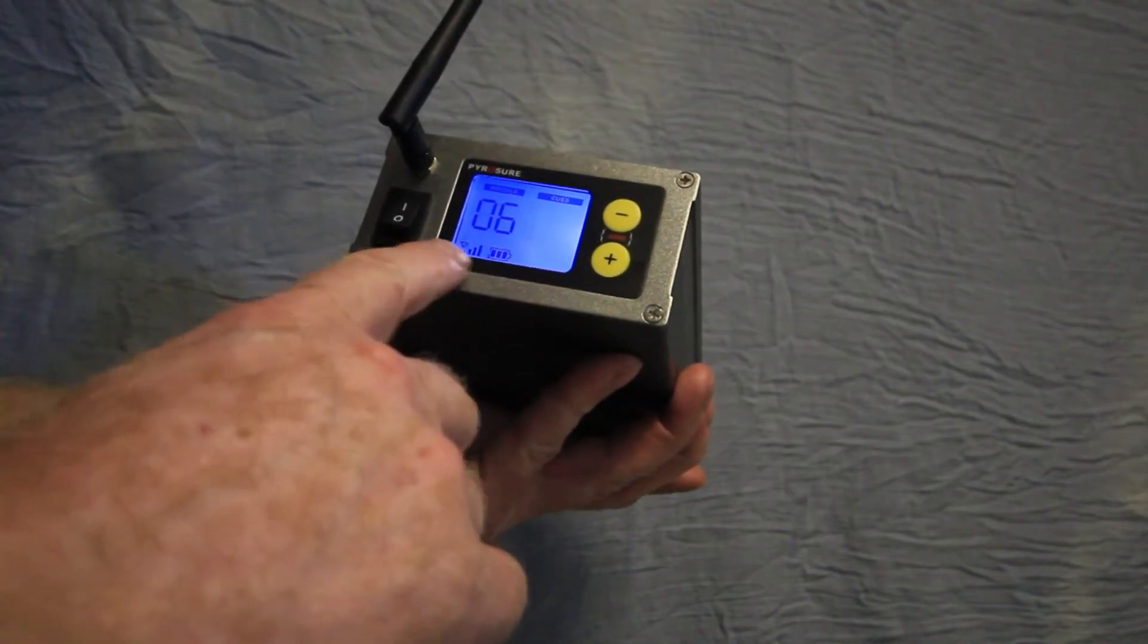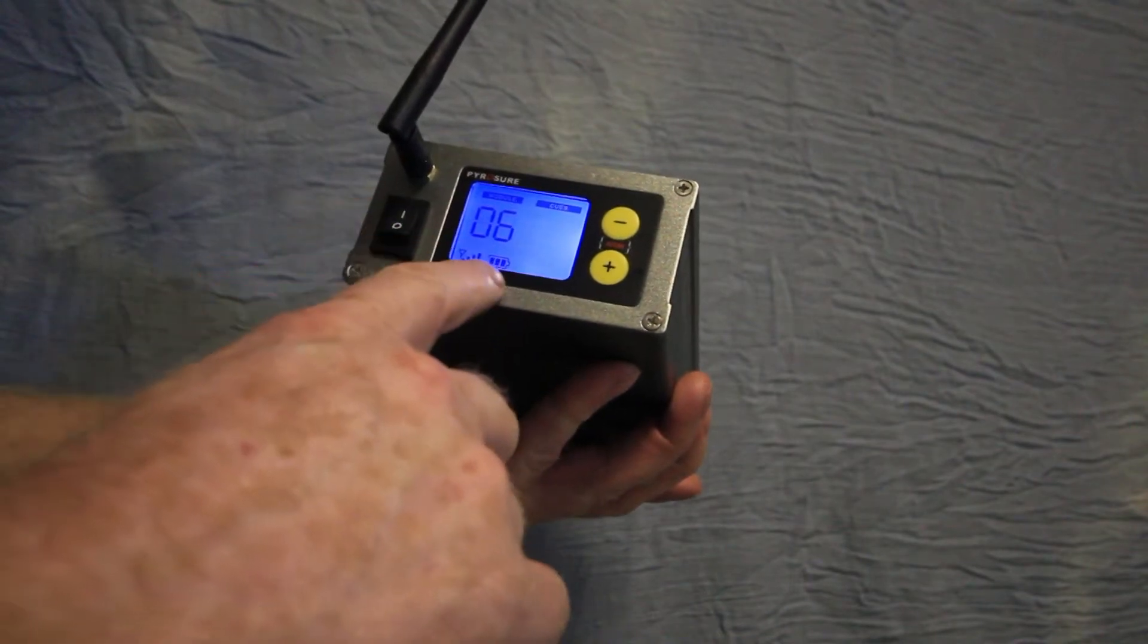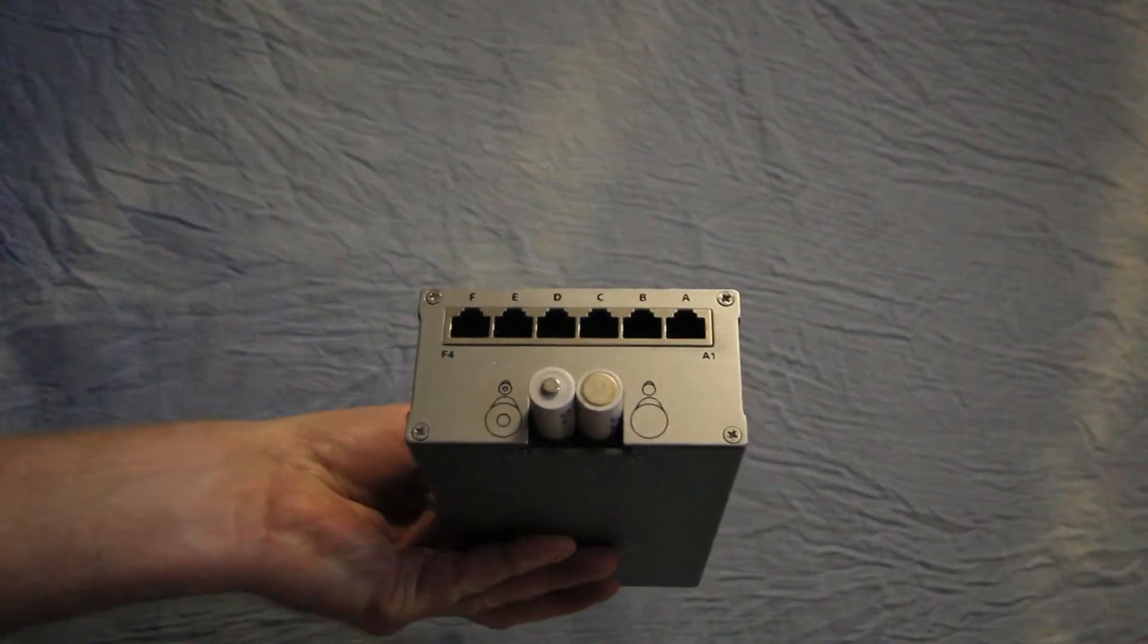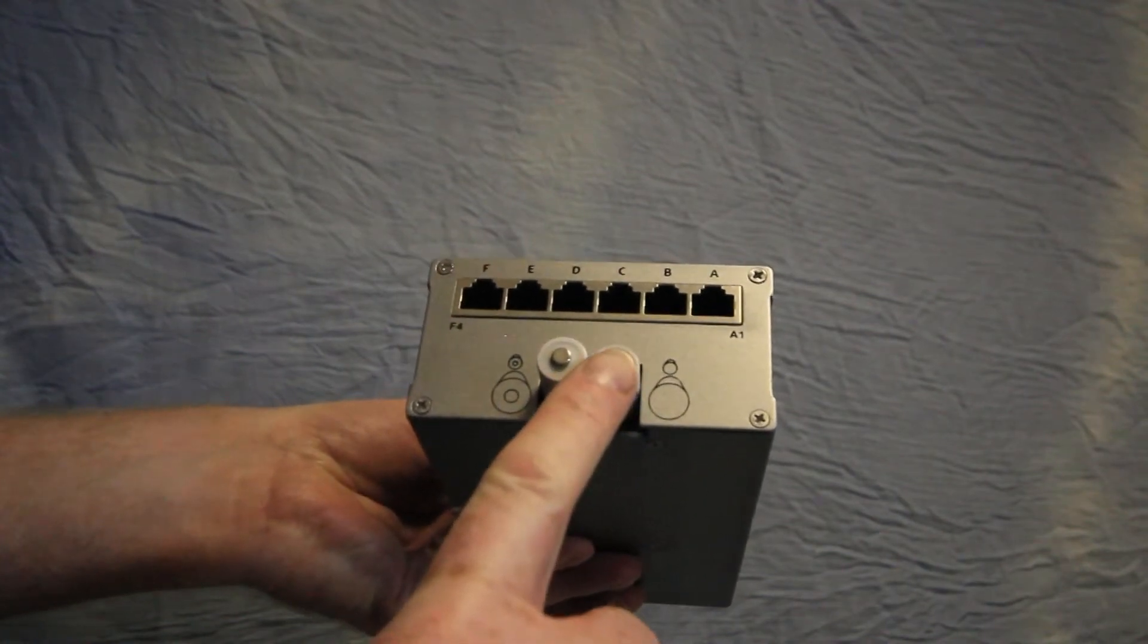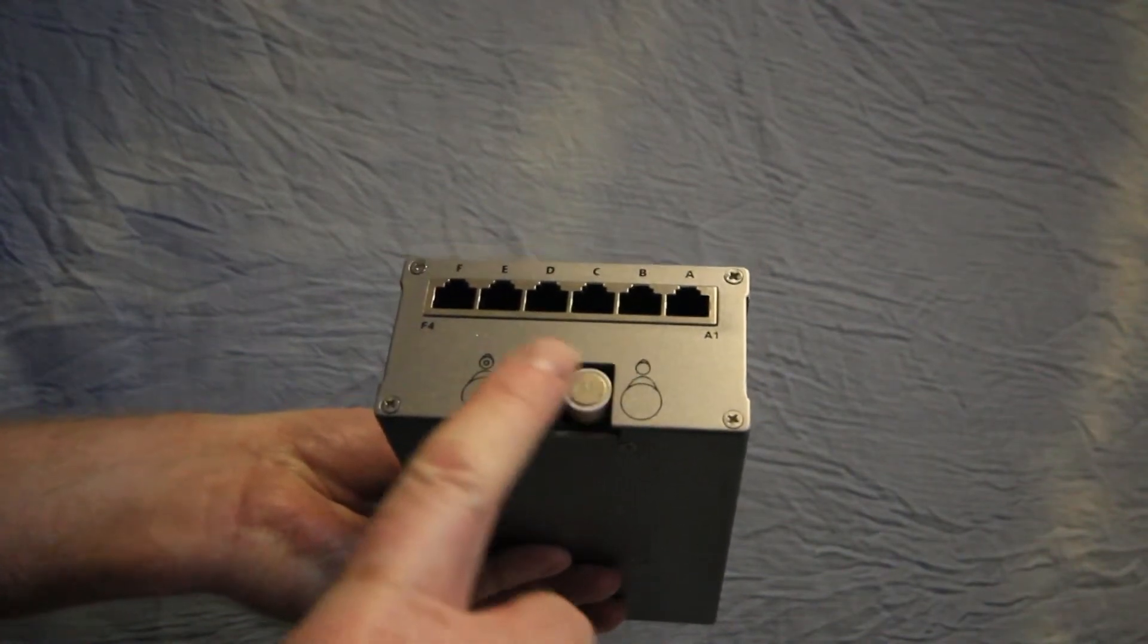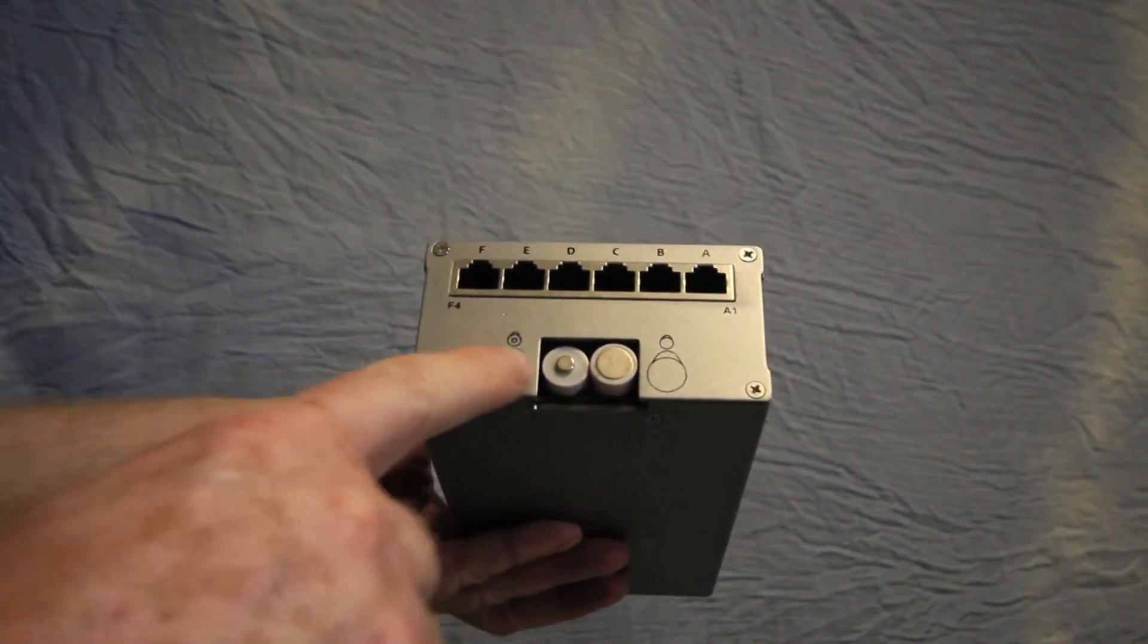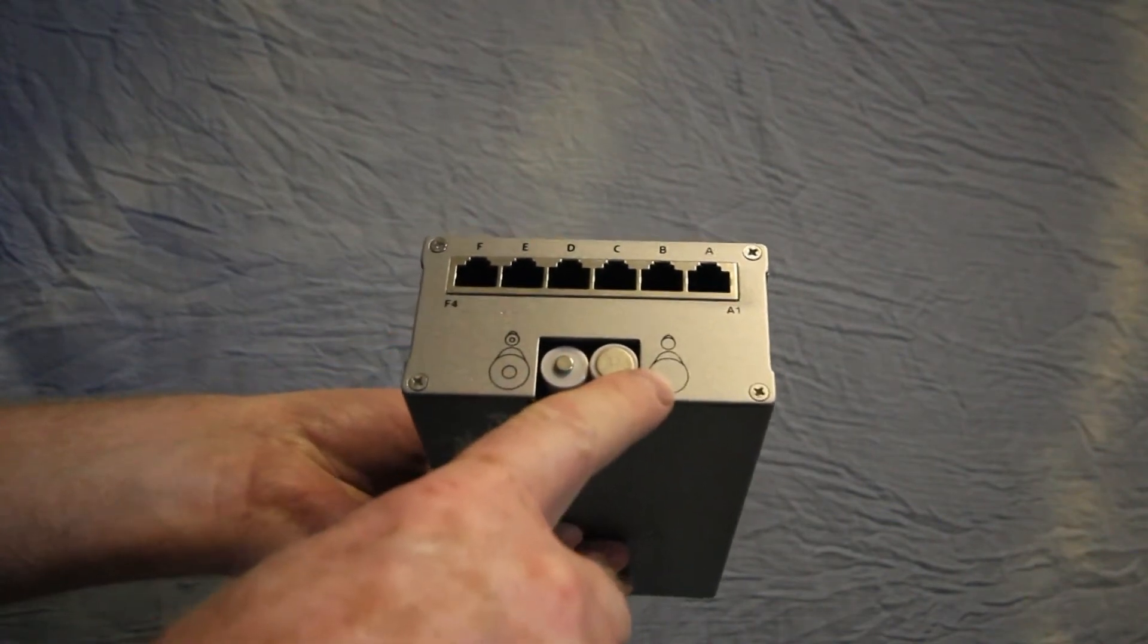The module displays signal strength, battery strength, and the address. Batteries are inserted, AA rechargeable, in this fashion matching the image to the left and the image to the right.